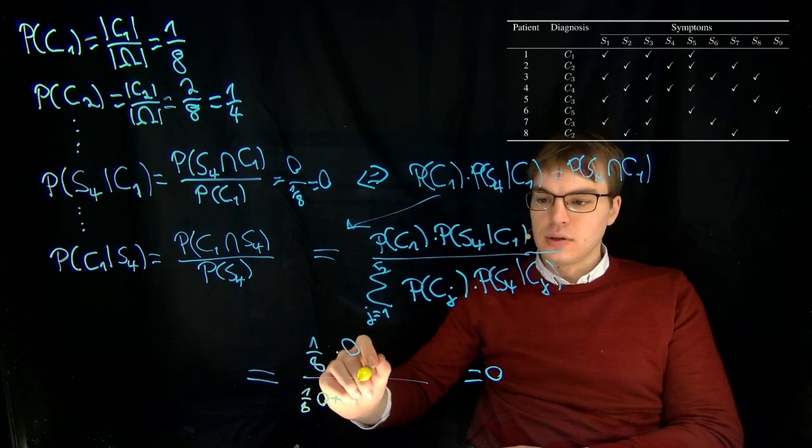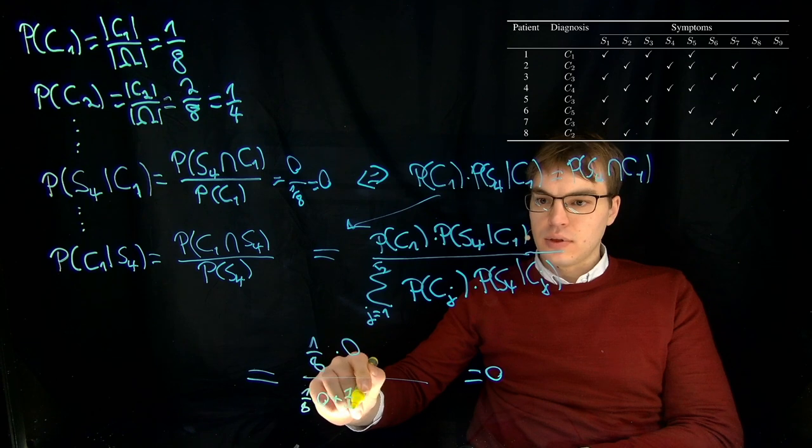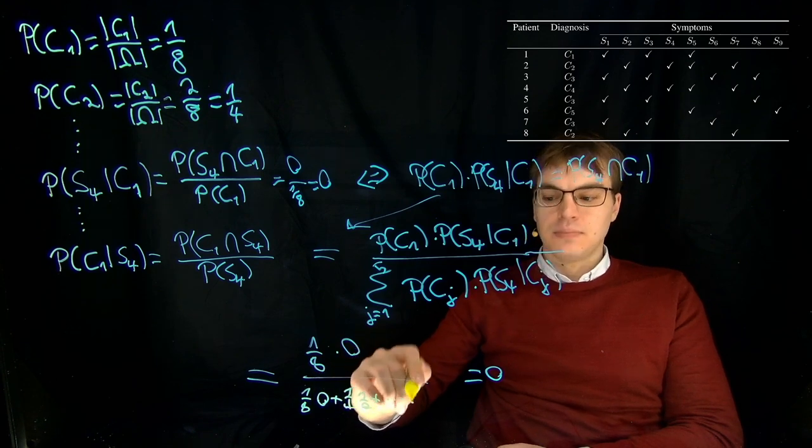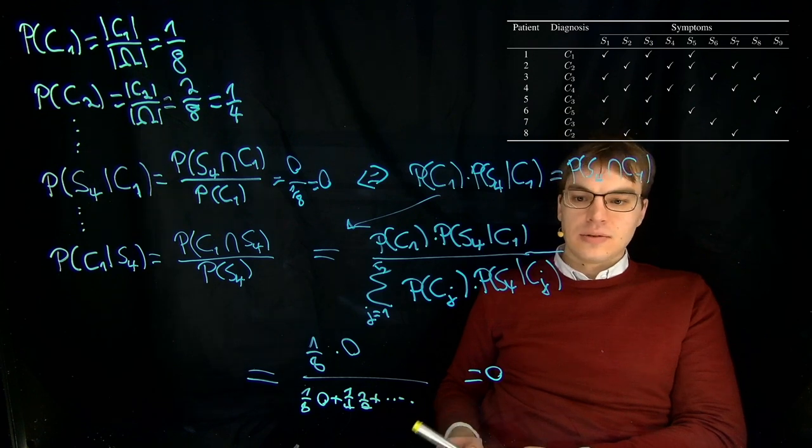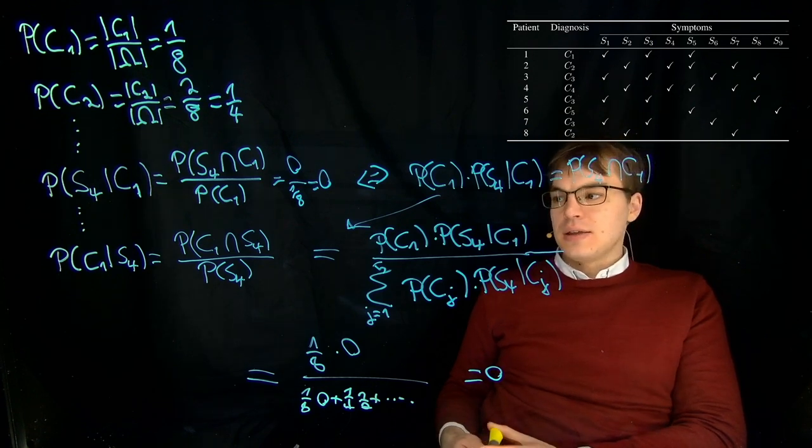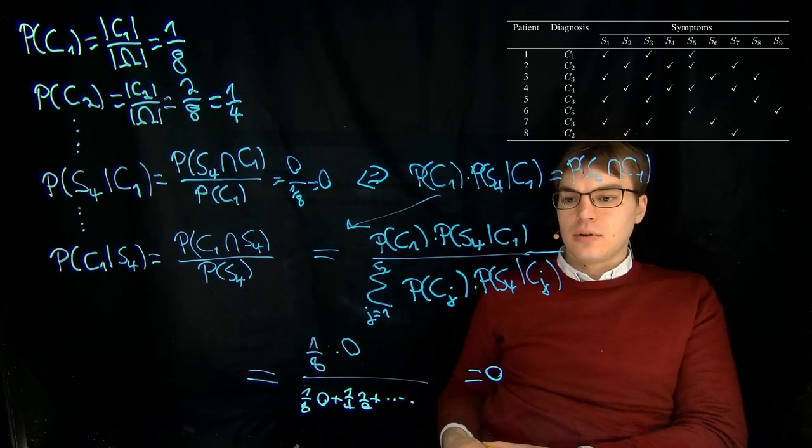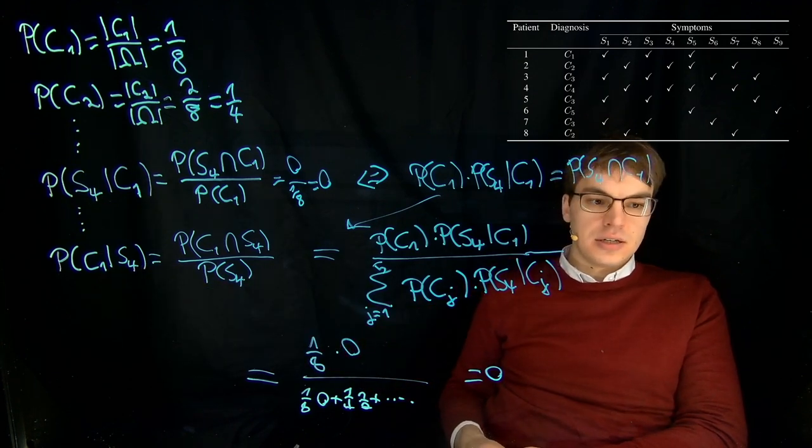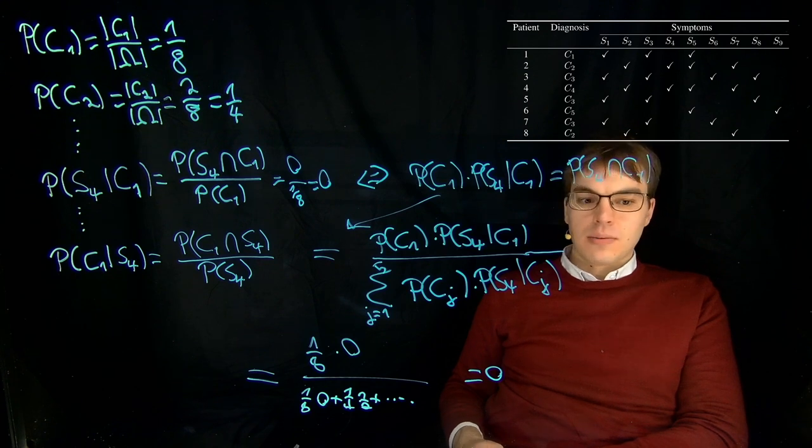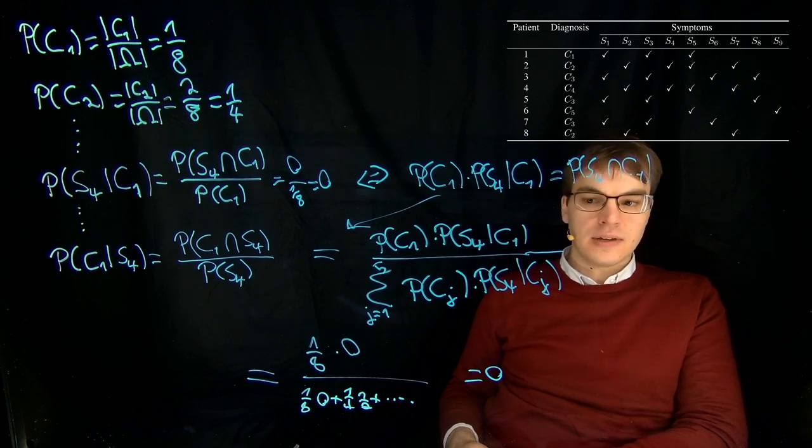Then we have it for j equals 2, one fourth times one half plus and so on. So this way you can see how the computation works. And in the end, we get for our symptom S4 and for all our diseases C_j, we get our a posteriori probabilities. And this is how we can perform a classification.